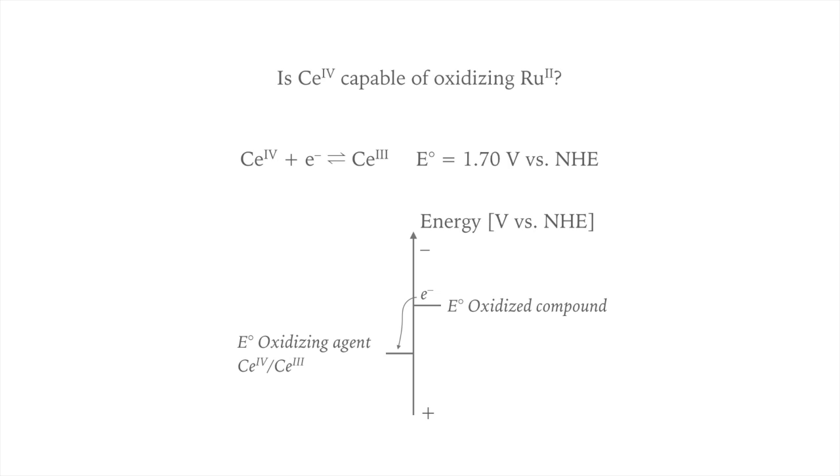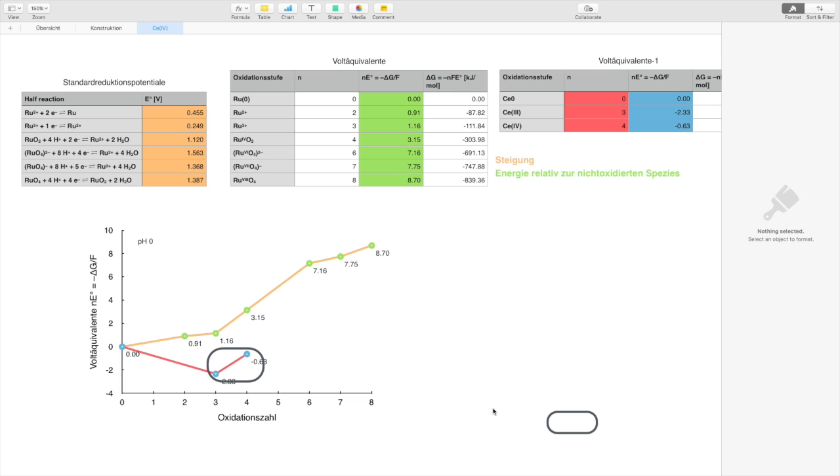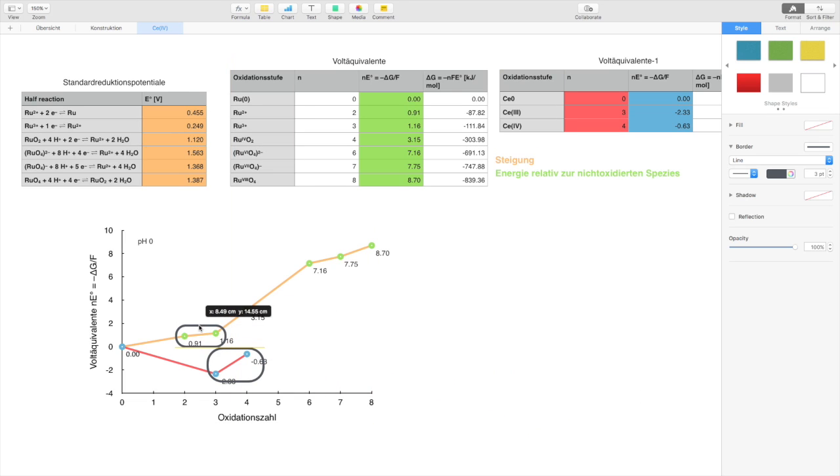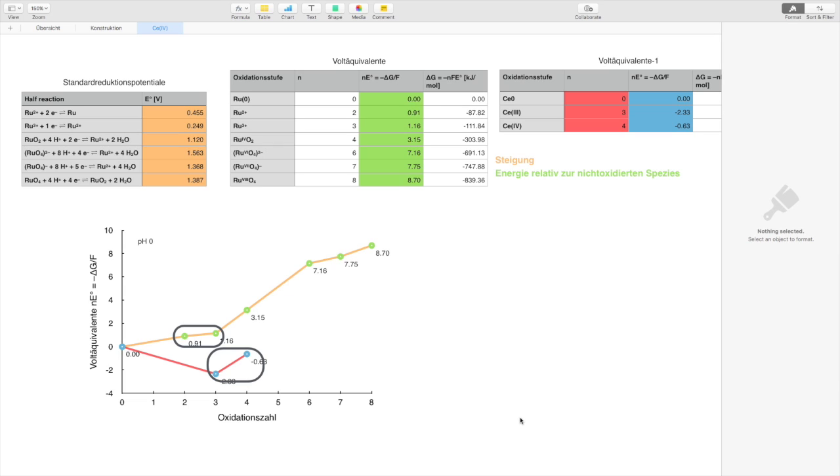The slope between cerium 3 and cerium 4 has to be higher than between ruthenium 2 and ruthenium 3. Only then the process takes place.